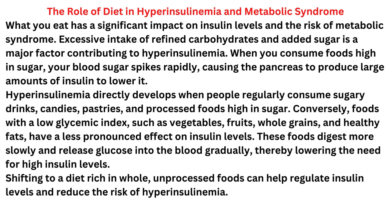Conversely, foods with a low glycemic index, such as vegetables, fruits, whole grains, and healthy fats, have a less pronounced effect on insulin levels. These foods digest more slowly and release glucose into the blood gradually, thereby lowering the need for high insulin levels. Shifting to a diet rich in whole, unprocessed foods can help regulate insulin levels and reduce the risk of hyperinsulinemia.